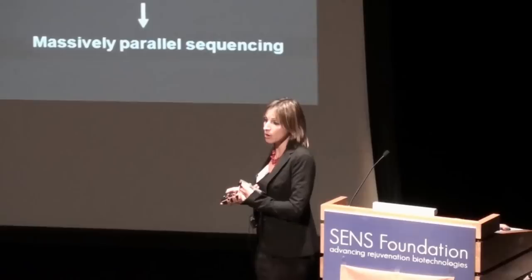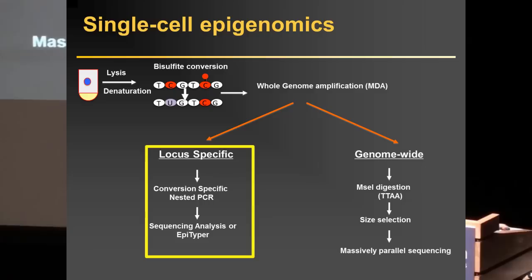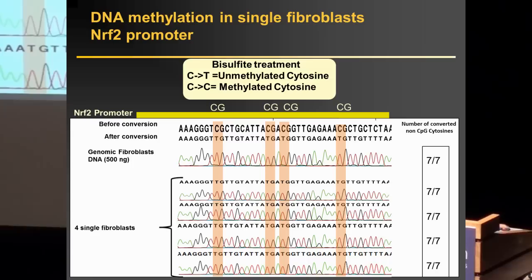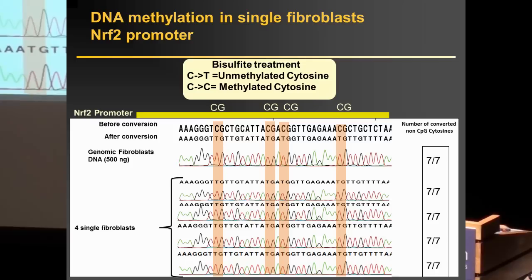Looking at the locus-specific approach, we target promoter regions of interest using nested PCR primers. I'm showing here data obtained on single fibroblasts, targeting the FP2 promoter, a stress response gene that is highly expressed in fibroblasts. We expect this promoter to be unmethylated. In the genomic DNA extracted from fibroblasts, we see conversion of those cytosines — all Cs are converted to T — which is what we expect. When we look at single fibroblasts, we see full conversion at all CpG sites, confirming no epimutations. We obtain 100% conversion on non-CpG cytosines.